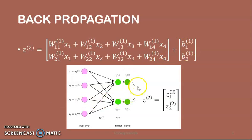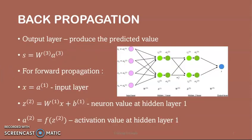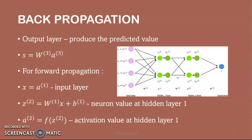Looking at the neural network illustration, we see that the weighted input of layer 2 is expressed using Z1 and Z2 of layer 2, which are the sums of multiplication between every input X_i with the corresponding weight W_{ij} of layer L. This is the same as the matrix result. Coming to the final part of the neural network, the output layer produces the predicted value. It is represented as a single neuron colored in blue and evaluated as S equals weight of layer 3 multiplied by activation in layer 3, which can be simplified using matrix representation.